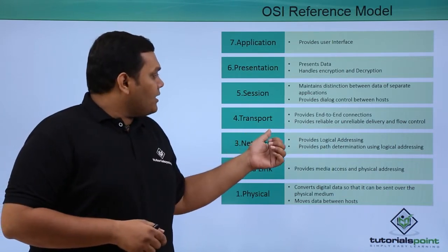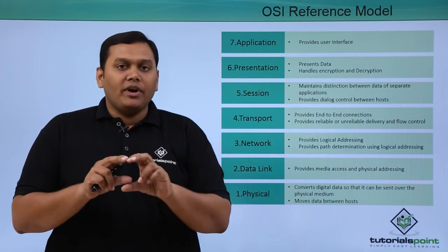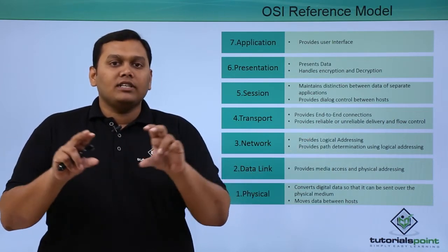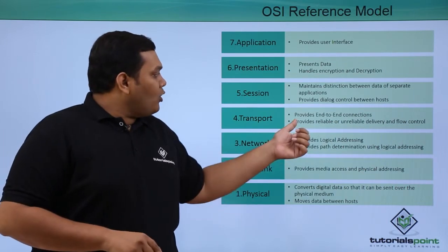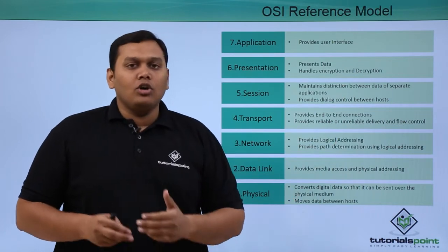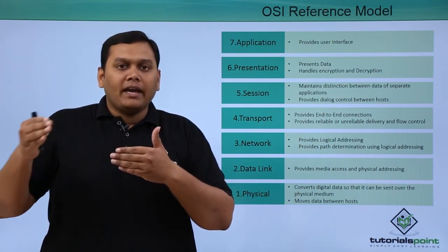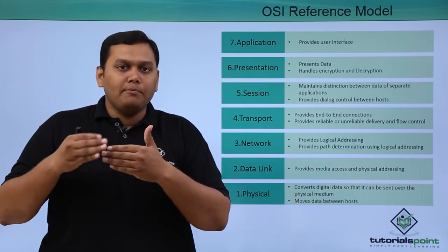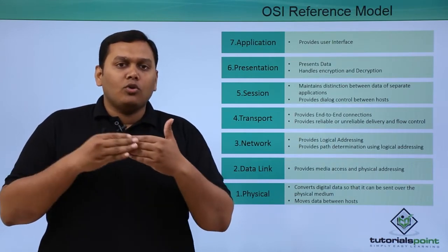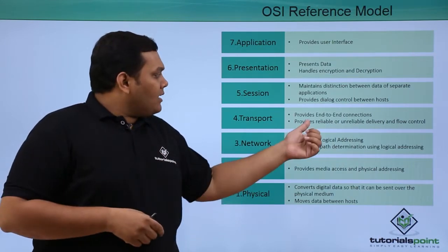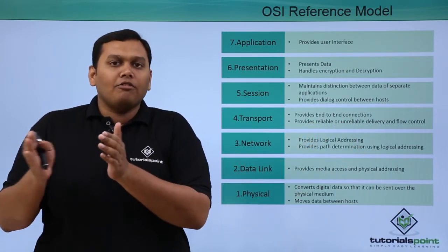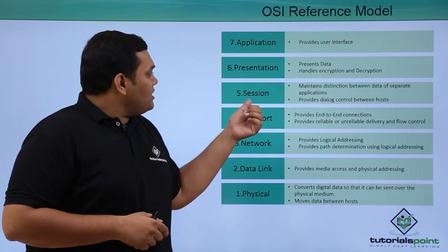Coming to the transport layer — it provides end-to-end connections so that data is received and transmitted. It also provides reliable or unreliable delivery and flow control. It ensures that data is transferred packet by packet, frame by frame, or bit by bit from one host to another in a reliable or unreliable manner, and it controls the flow of data.